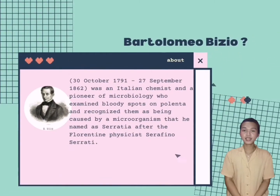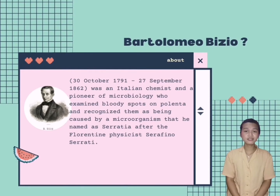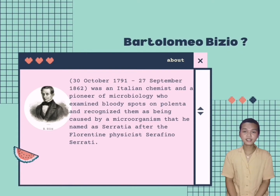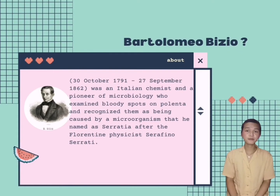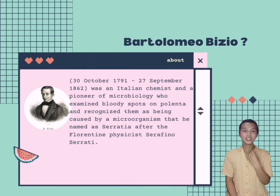So, who is Bartolomeo Bizzeo? Bartolomeo Bizzeo was born on the 30th of October 1771 and died on September 27, 1862. He was an Italian chemist and a pioneer of microbiology who examined bloody spots on polenta and recognized them as being caused by a microorganism that he named Serratia after the Florentine physicist Serafino Serrati.